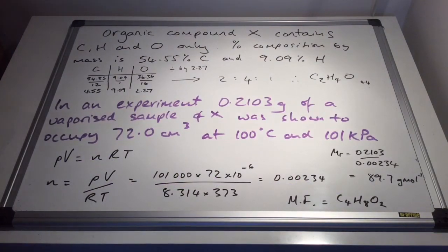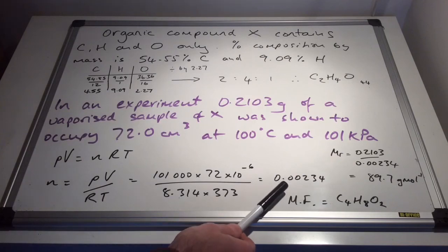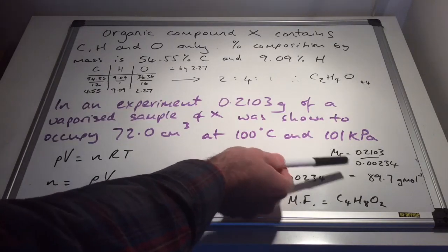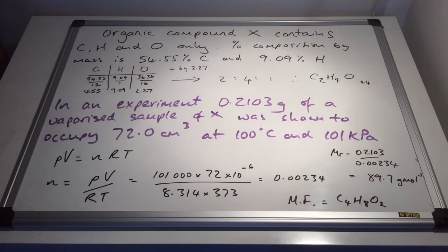And there at the bottom now, you can see my solution to this part of the question. Ultimately, we need to calculate the MR for X, so we need to know how many moles we've got in the sample. So we'll rearrange the ideal gas equation for moles for N. There's the numbers there with the correct conversions. So the moles of X comes out at 0.00234 to three significant figures, and that gives us an MR of 89.7 grams per mole.